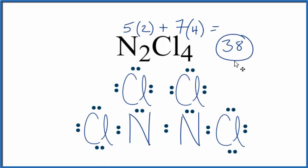At this point, we've used 34, and all the chlorines have octets, but each nitrogen only has 6. We have 4 more, so we can just complete the octets on the nitrogen atoms, and this is the Lewis structure for N2Cl4.